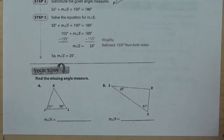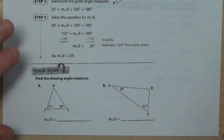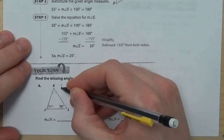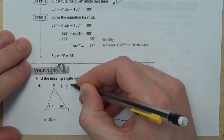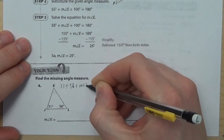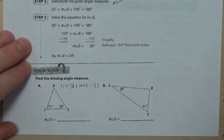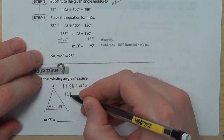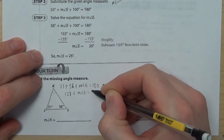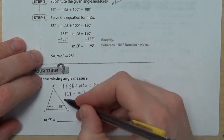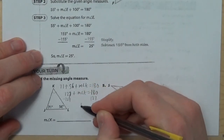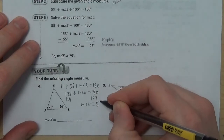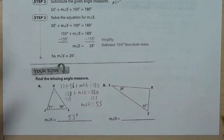Let's do a little practice — find the missing angle measure. We're looking for the measure of angle K. We know the other two angles are 71 and 56, so: 71 plus 56 plus the measure of angle K equals 180 degrees. Adding 71 plus 56 gives 127, so 127 plus the measure of angle K equals 180. Subtracting 127 from both sides, the measure of angle K equals 53 degrees.